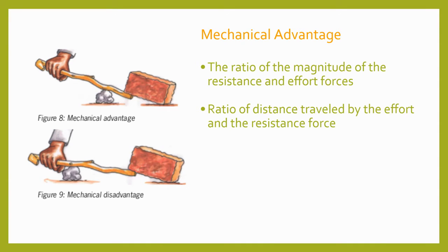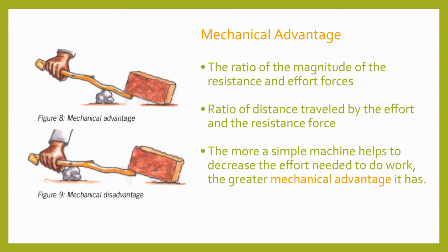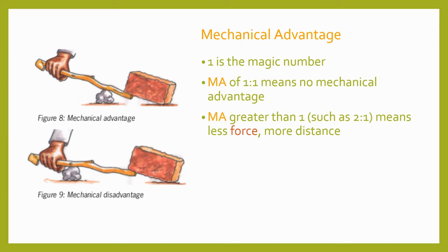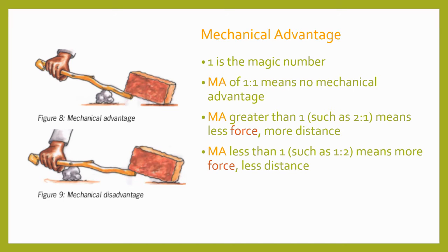Mechanical advantage is expressed as a ratio of the magnitude of the resistance and effort forces. It can also be expressed as the ratio between the distance traveled by the effort and resistance forces. One is the magic number. A simple machine with a mechanical advantage of 1 to 1 does not change the magnitude of force or the distance required to lift a load. A mechanical advantage greater than one, such as 2 to 1, means less effort force is required over a greater distance. And a mechanical advantage of less than one, such as 1 to 2, means more effort force will be required but over less distance.